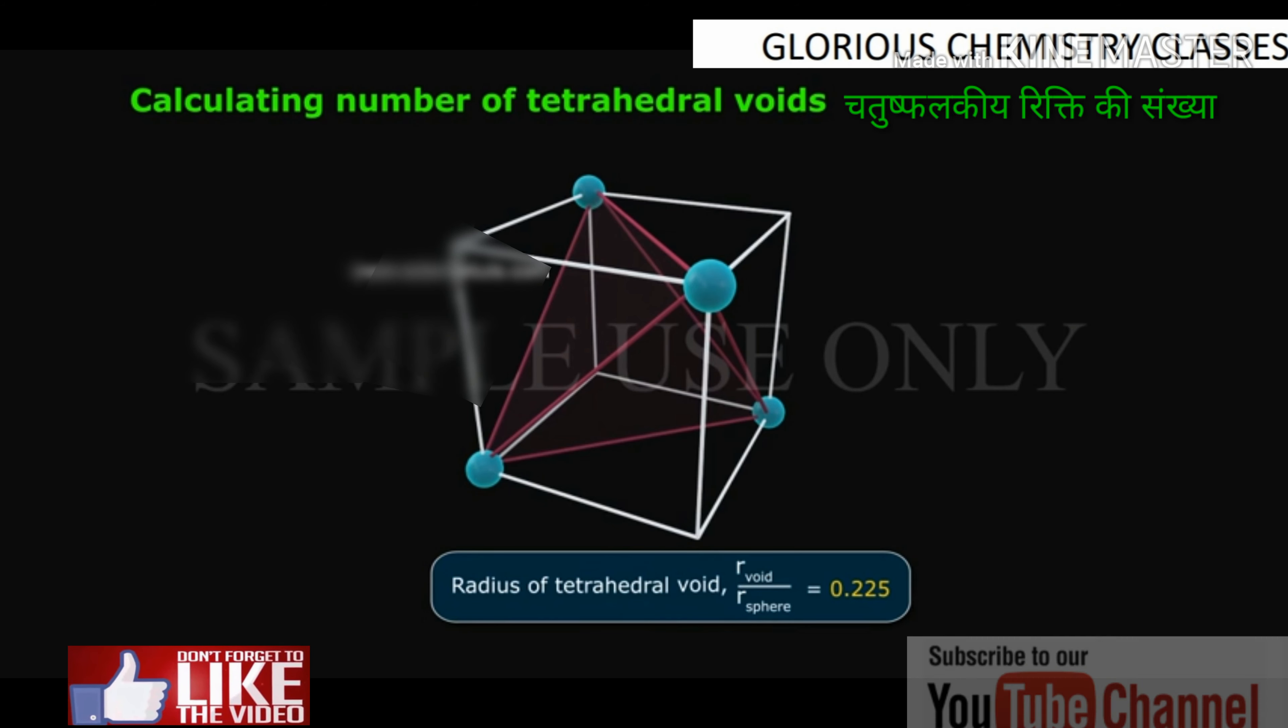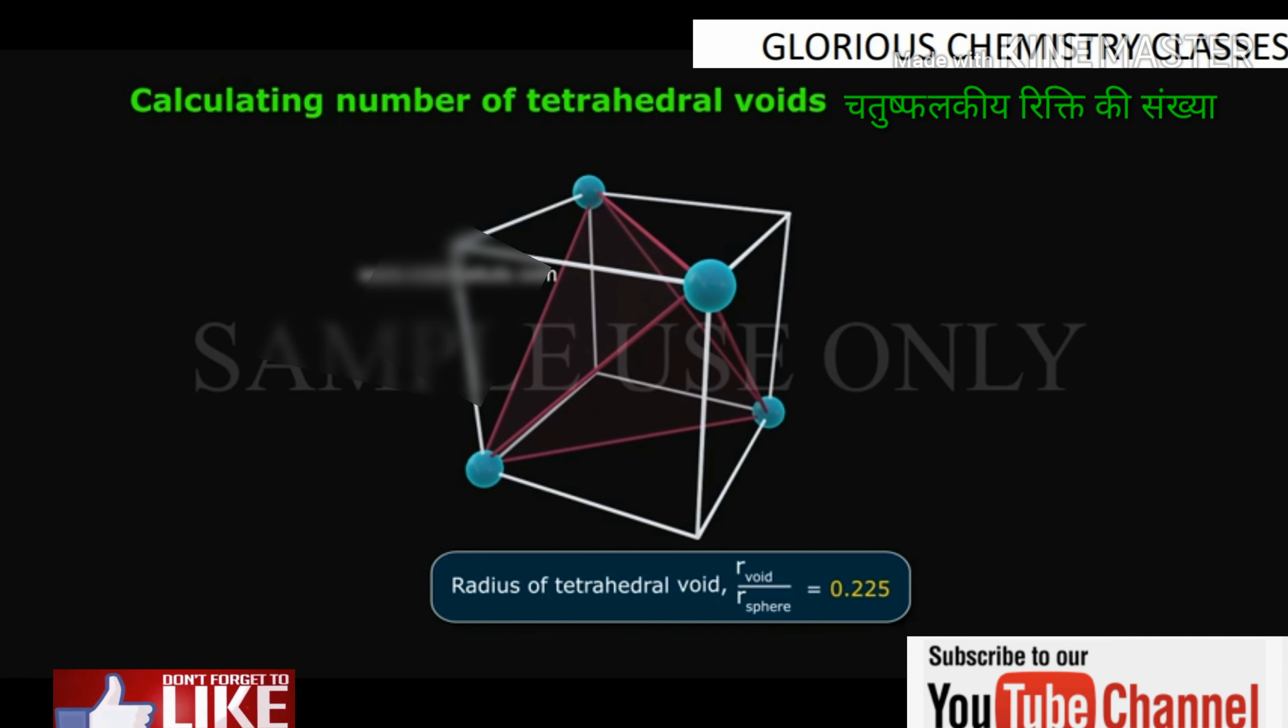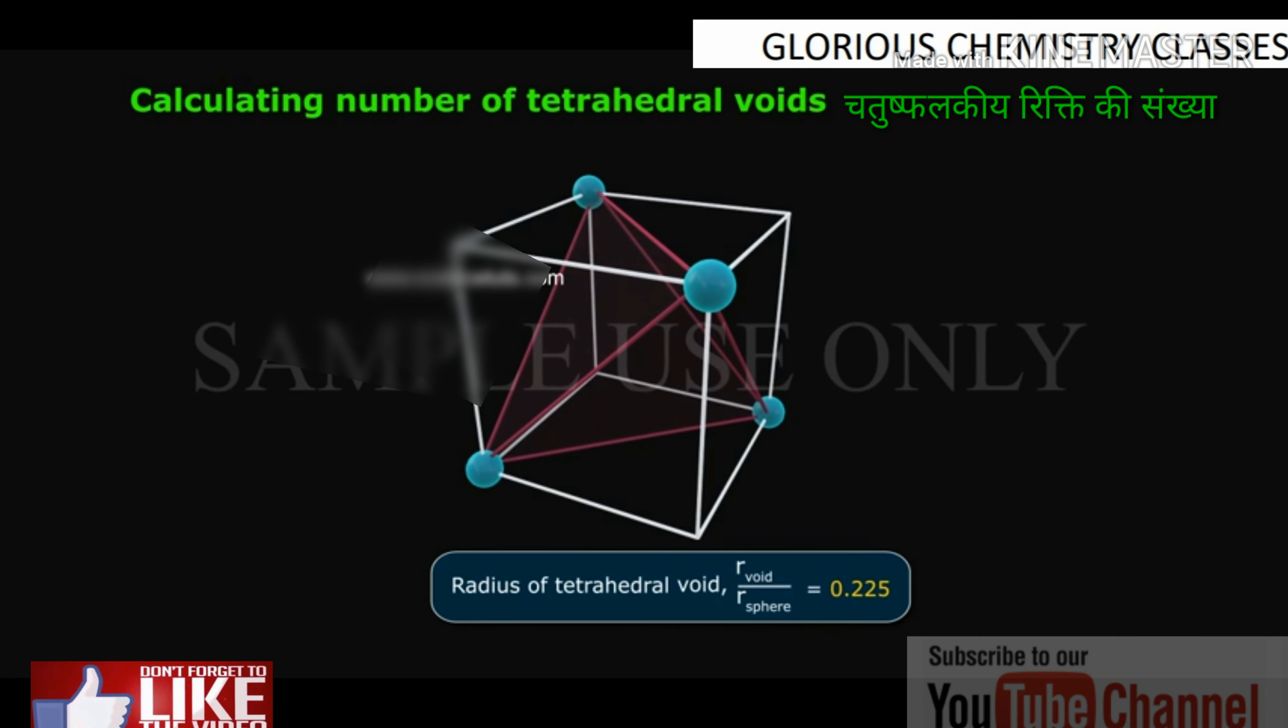Radius ratio of tetrahedral void: R_void by R_sphere is equal to 0.225.